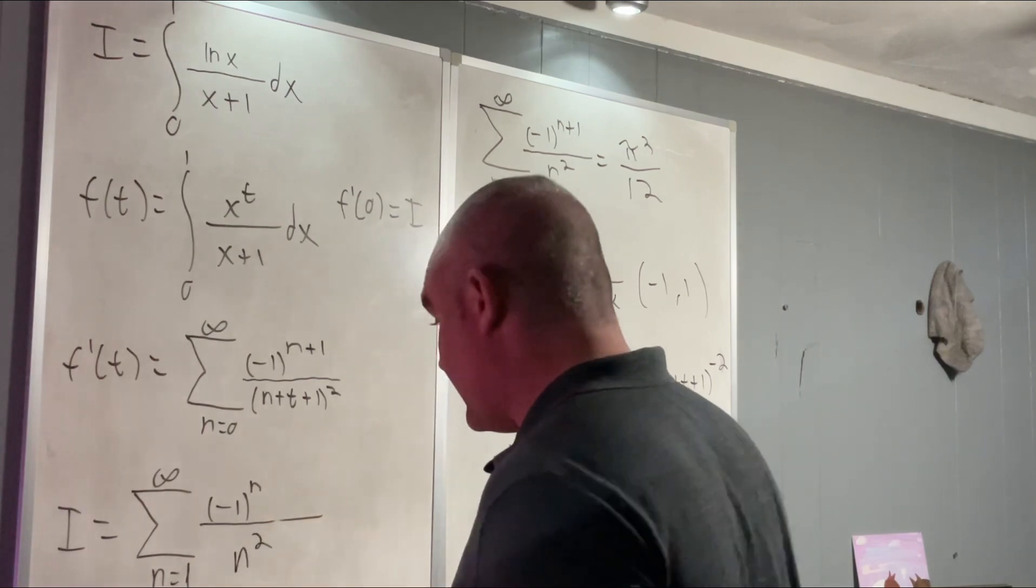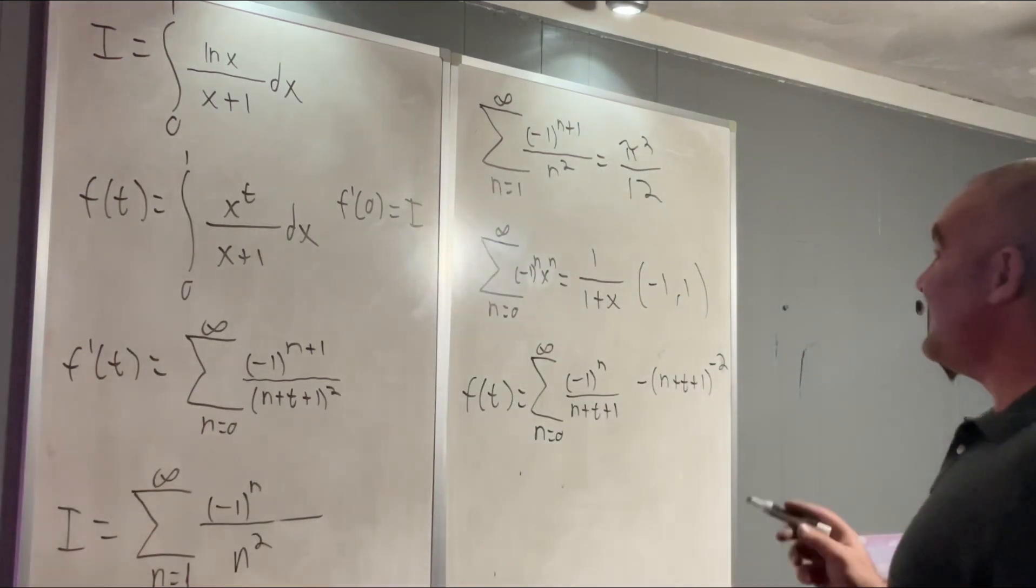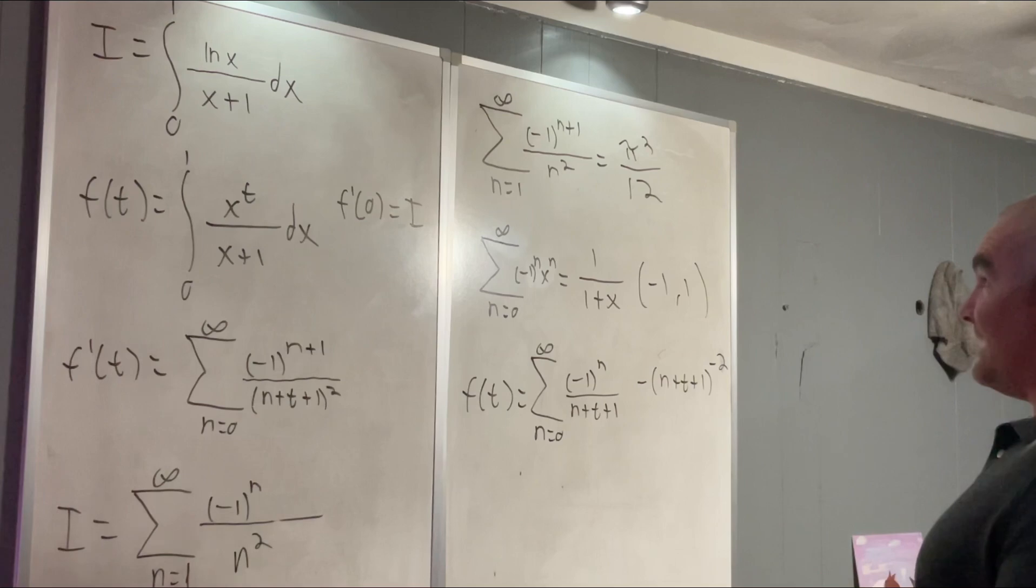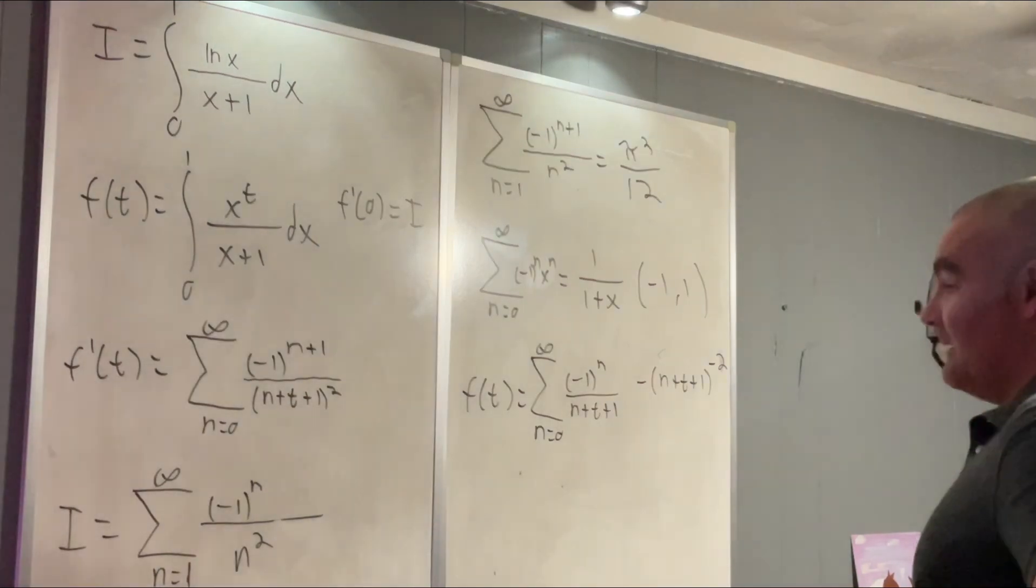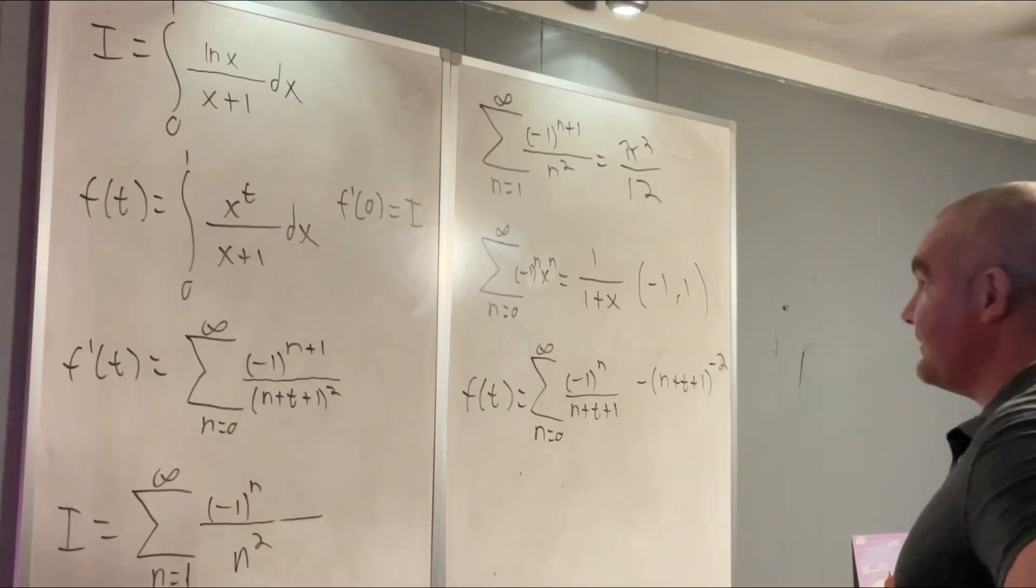We add 1 to the index and subtract 1 from all of those n's inside our sum. That'll just give us n squared. Well, that's a little bit better.